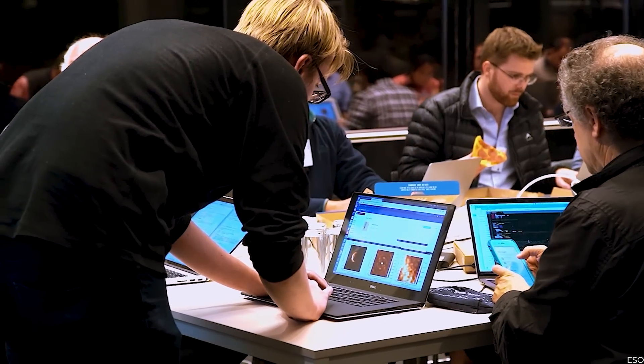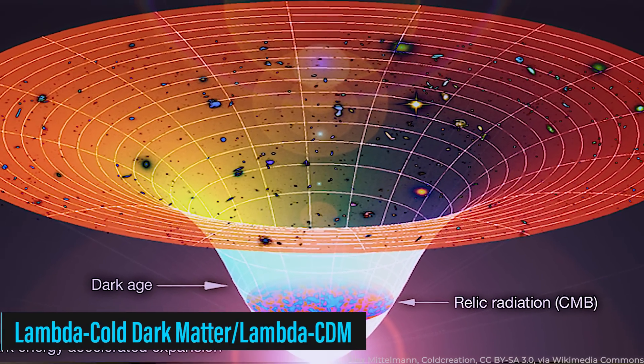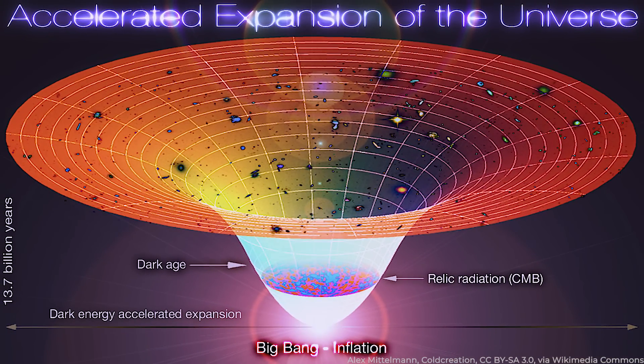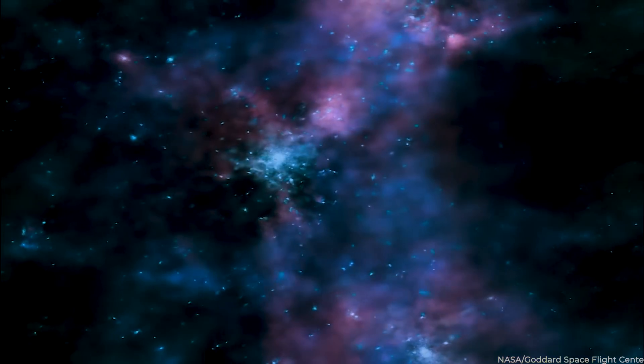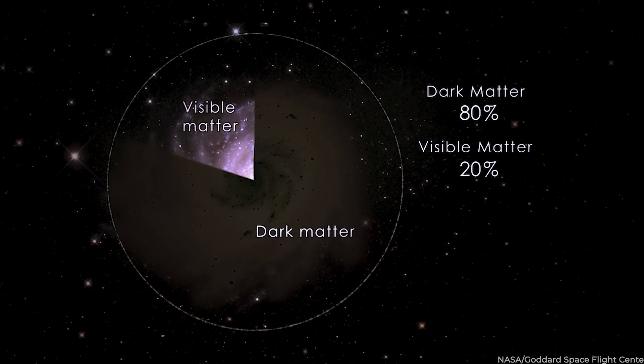Currently, the cosmology world is all abuzz about a model called Lambda Cold Dark Matter, or Lambda CDM for short. It's a bit like the current in theory. This model paints a picture of a universe that is flat, homogenous, and isotropic. And under the wave of two intriguing and elusive substances, dark energy and dark matter.